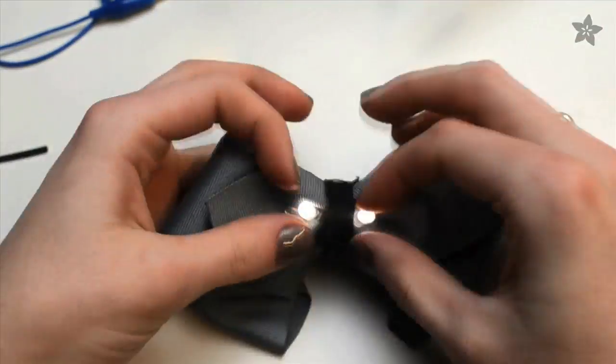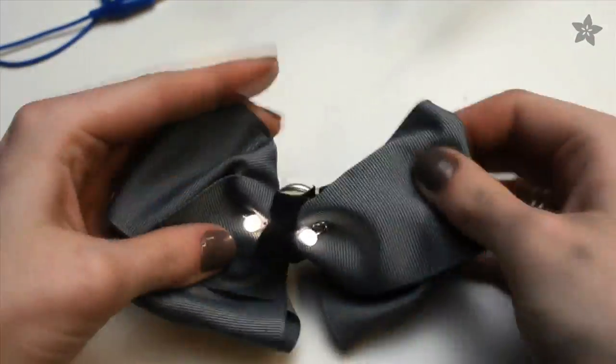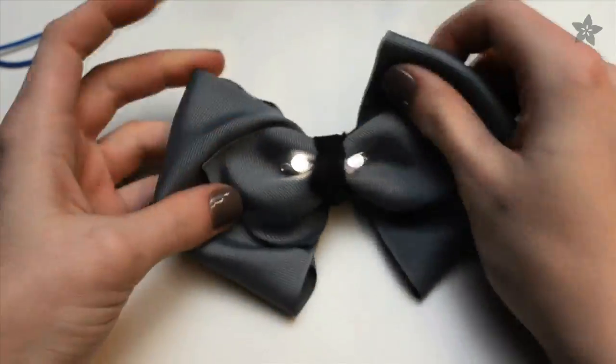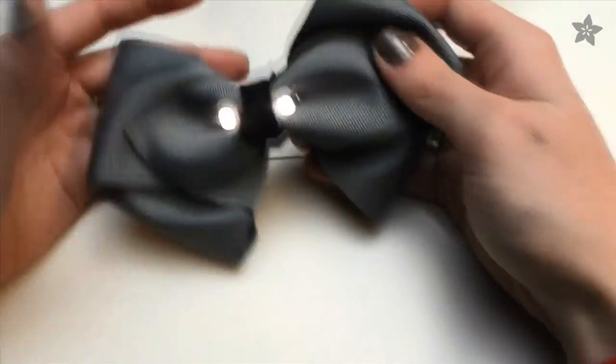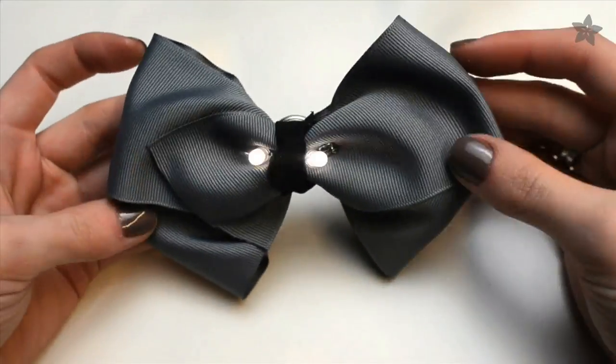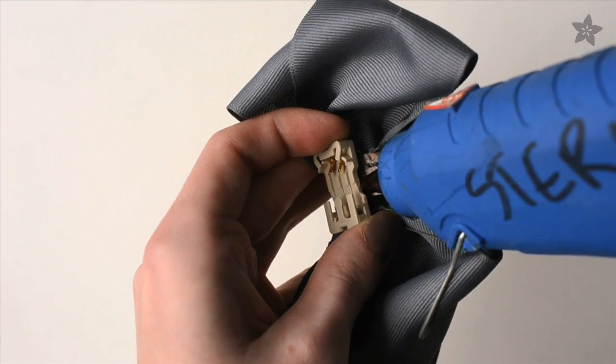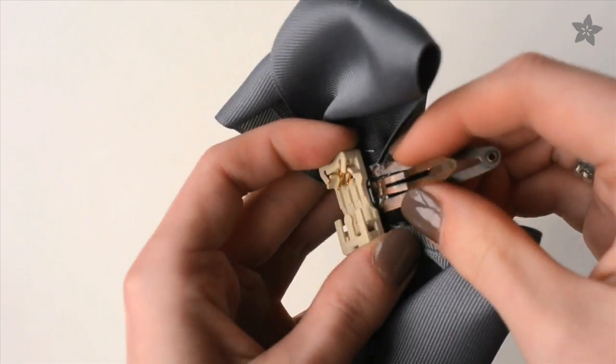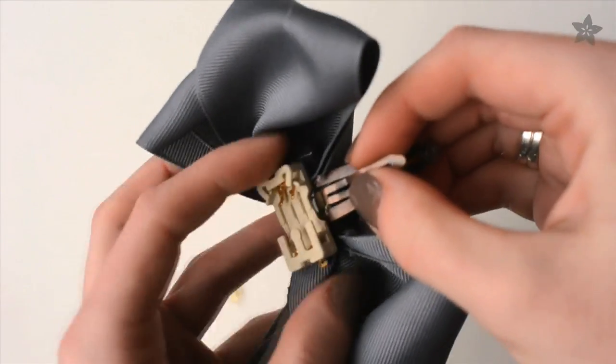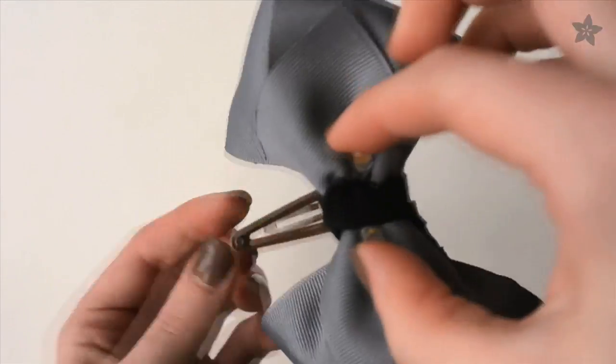Once you've cut off all your thread tails, it's time to test out your circuit. Put in the battery, and if your LEDs don't light up, check to see if you have your battery holder installed backwards. You can glue a hair clip in between the battery holder and the ribbon bow, but you could just as easily make these into shoe clips or sew it onto a bag or anything else you'd like.